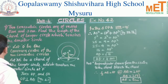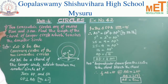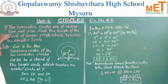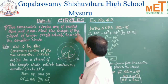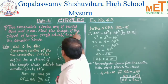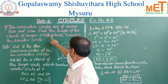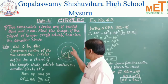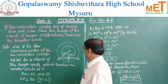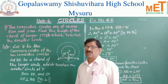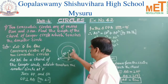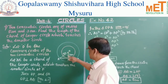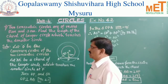Now children, the seventh problem: two concentric circles have radii of 5 centimeters and 3 centimeters. Find the length of the chord of the larger circle which touches the smaller circle. Both circles share the same center O, hence they are concentric circles. The radius of the smaller circle is 3 cm and the larger circle is 5 cm.